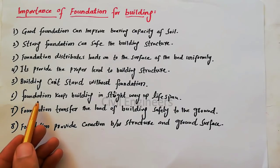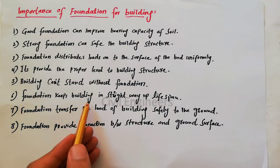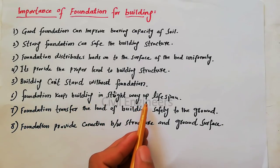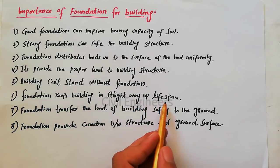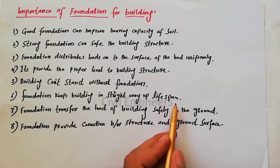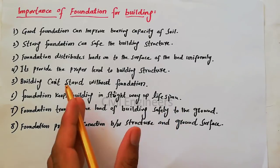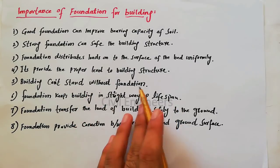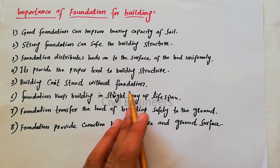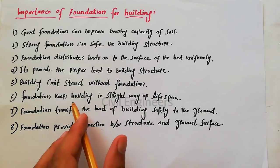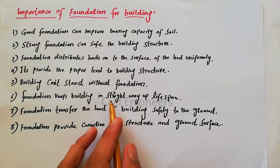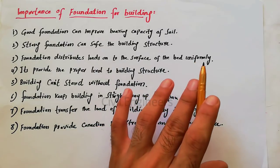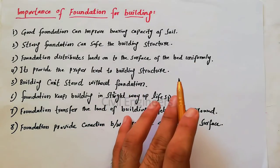The sixth point is that a foundation keeps the building in a straight way over its life span. If you don't provide the foundation, your building will not be straight and there will be more problems.